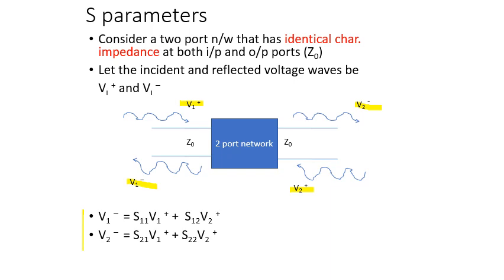In generalized form, the scattering parameters are given by the following S-matrix. If you look at this matrix, V1 minus equals S11 times V1 plus plus S12 times V2 plus, and V2 minus equals S21 times V1 plus plus S22 times V2 plus. Now let us understand what S11, S12, S21, and S22 signify.